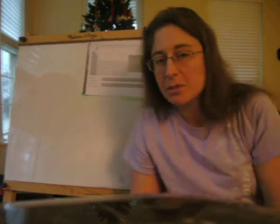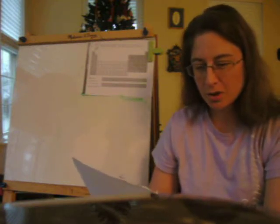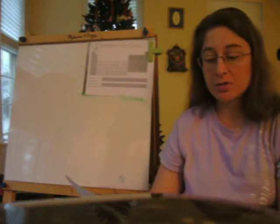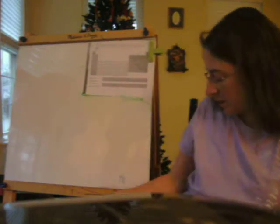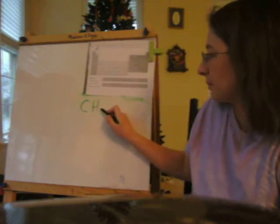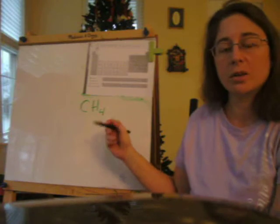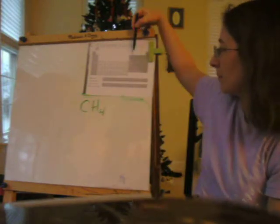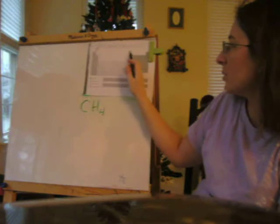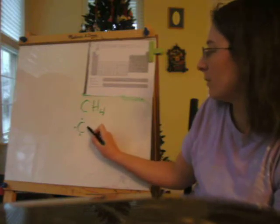Practice problems: this week you'll be drawing more Lewis structures, picking up from last week. Starting on practice problem seven: draw the Lewis structure for CH4 — that's methane. When drawing a Lewis structure, the first thing you want to do is draw Lewis dot structures for each atom. Carbon has four valence electrons, so you draw one, two, three, four dots around carbon.